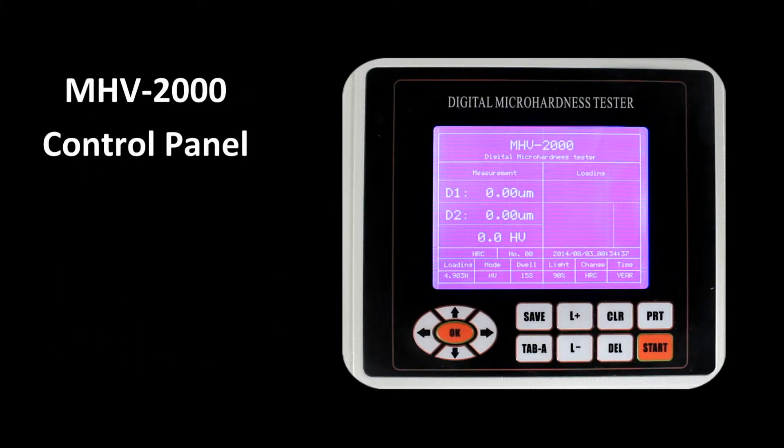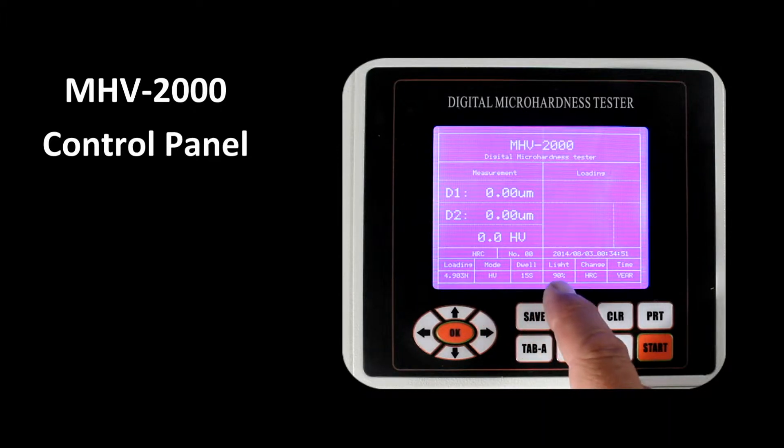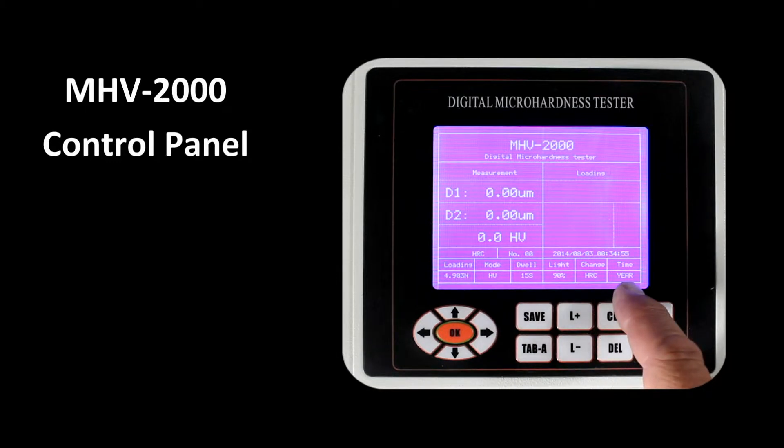The MHV-2000 control panel. There are a number of parameters that have been pre-programmed into the program settings. These would include the mode, which can be either a Vickers scale or a Knoop scale, the dwell time, the light intensity, the conversion chart scale, and the timestamp.